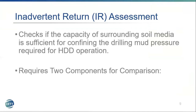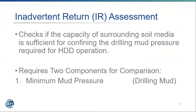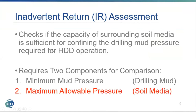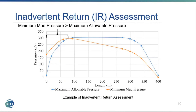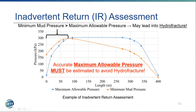During the IR assessment, two components need to be compared: the minimum mud pressure of the drilling mud and the maximum allowable pressure of the surrounding soil media. This maximum allowable pressure is related to my research. The goal is to keep the minimum mud pressure under the maximum allowable pressure. In this example, the first 75 meters show the minimum mud pressure is greater than the maximum allowable pressure, which may lead to hydrofracture.